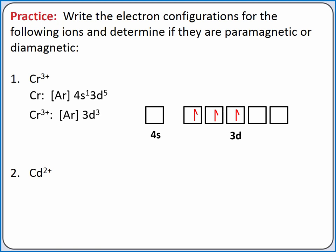To get the electron configuration for cadmium 2+, let's start with the electron configuration for cadmium. It's krypton 5s2 4d10.